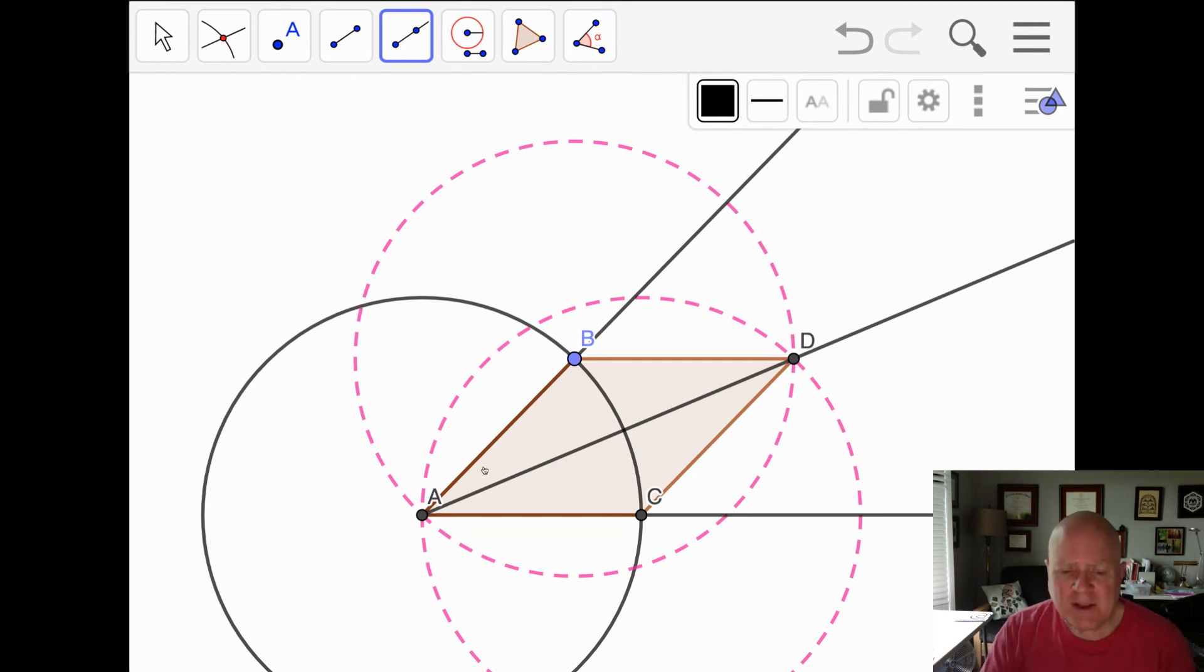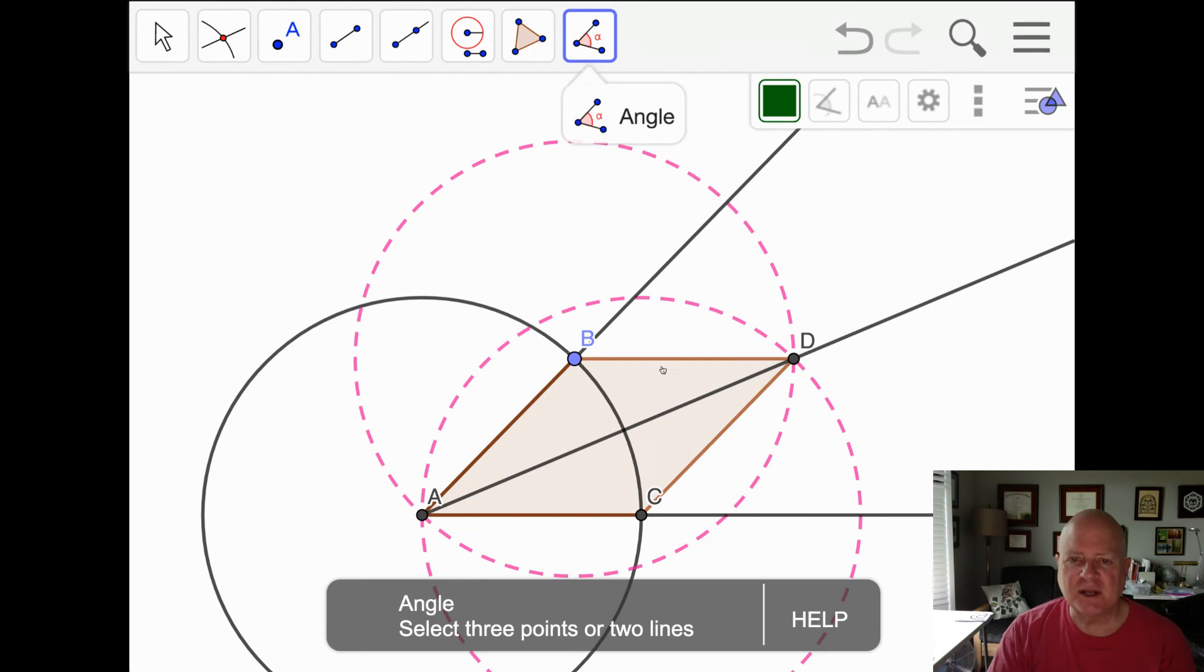And that means that these two angles are the same. Ray AD bisects angle BAC. It cuts it into two equal angles. I'll measure that to show you.